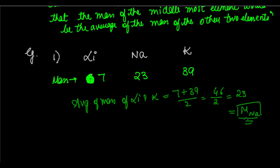You can see that the mass of sodium, 23, which is the middlemost element, is equal to the average of the masses of the other two elements — lithium and potassium. This is one very important example of Döbereiner's triads.